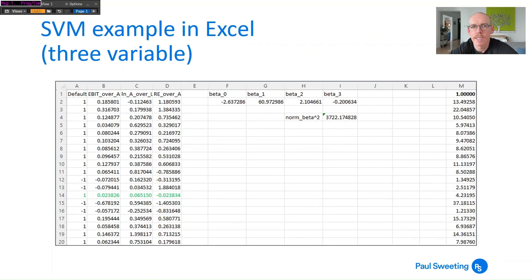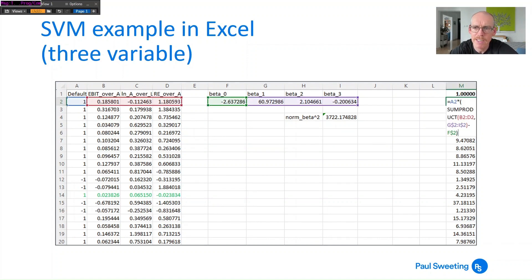So again you can do this in Excel and I've just expanded this from two variables to three variables, so now we've got retained earnings over assets as the third column and you'll see we've moved from β₀, 1 and 2 to β₀, 1, 2 and 3 but everything else is pretty much the same. And the formula is also very similar - instead of the sum products being over two variables it's now over three variables columns b to d and columns g to i, still less β₀ in column f and that formula gets copied all the way down.